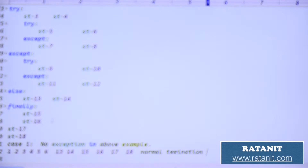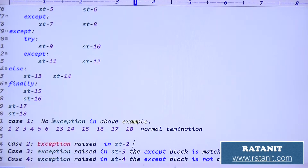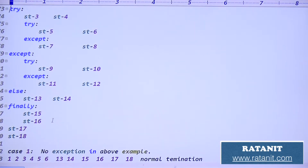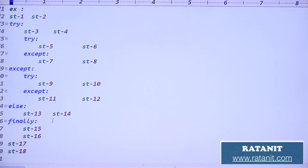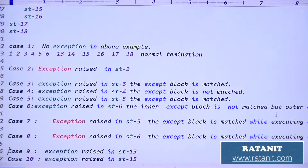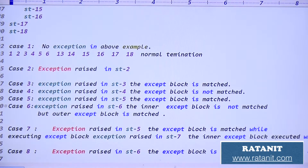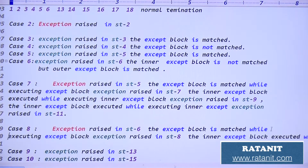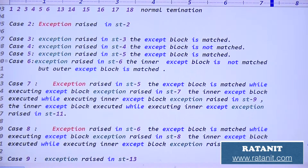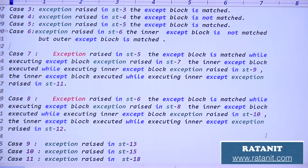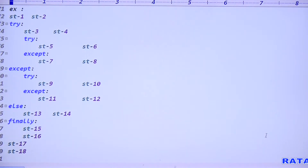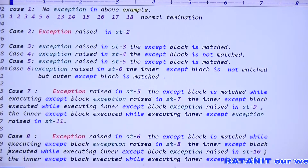Case two: exception raised in statement two. Observe carefully - exception raised in statement two. I'm scrolling up and down so you can write notes clearly. You can pause the video and write all the points. Case seven and eight are big cases. Case two: exception raised in statement two means control has not yet entered the try block.